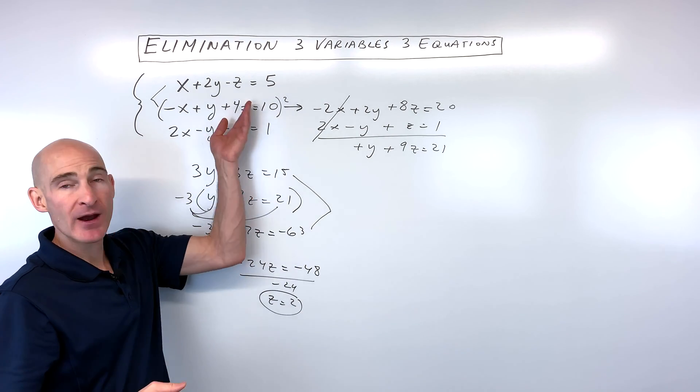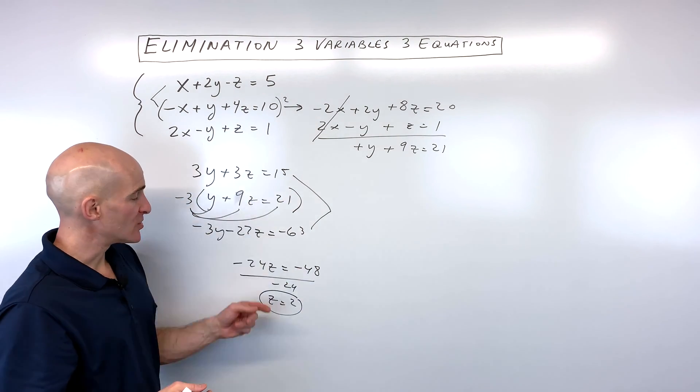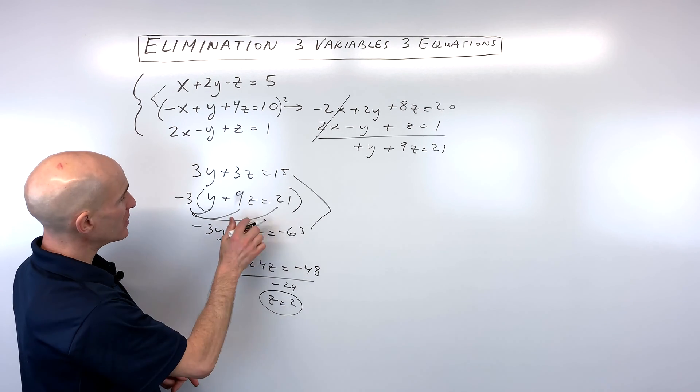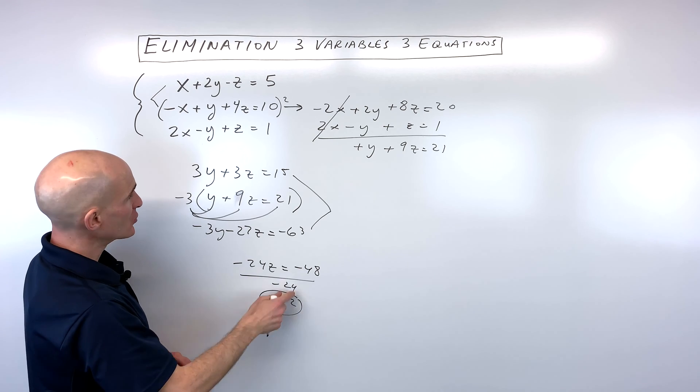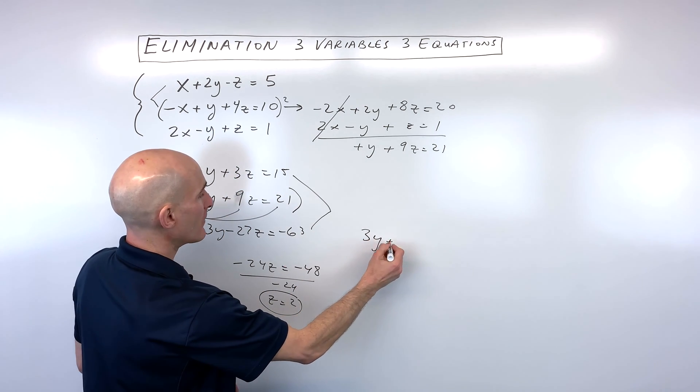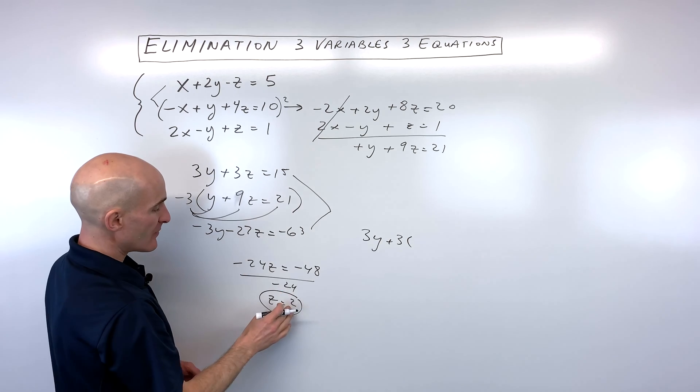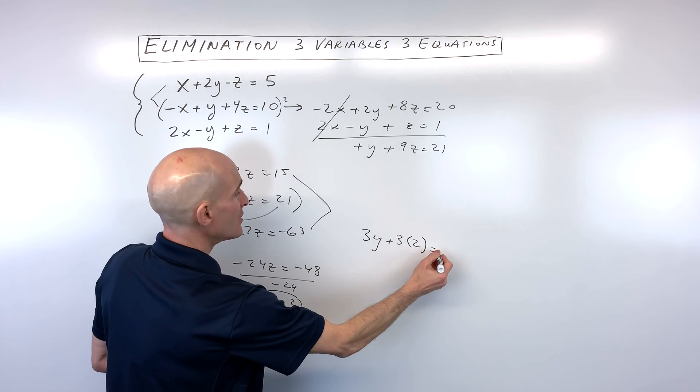Now what we want to do is work our way backwards. We're going to do back substitution. So if z equals 2, you can put it in for this z or this z. It doesn't matter which one. So I'm just going to go ahead and put it into this one equation here. So we have 3y plus 3. Instead of z, I'm going to put 2 in, equals 15.